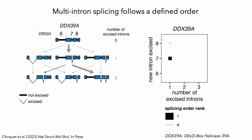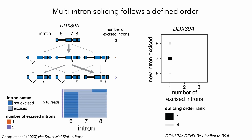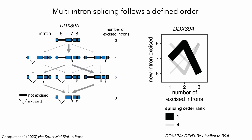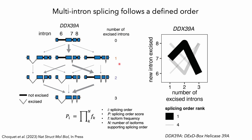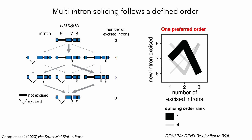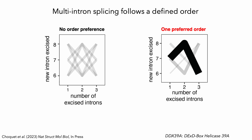We can then move on to all splicing patterns in which two introns have been excised. Again, there are three possibilities, of which one is much more frequent than the other two. This tells us that after intron seven has been removed, it's usually intron eight that is next. And then we can add the third and final intron. On these plots, the thickness and opacity of each line is proportional to a splicing order score, which is obtained by multiplying the frequencies of each intermediate isoform that makes up the splicing order of interest. Of these six possible splicing orders, you can see that one of these is strongly preferred.